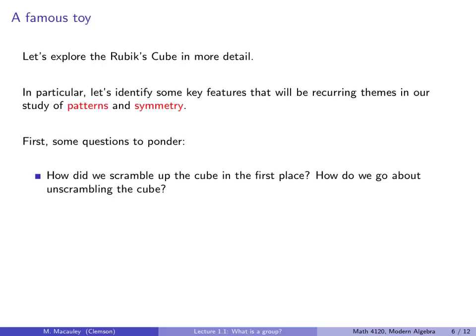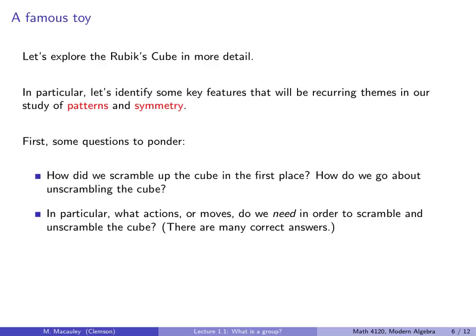So that's the next question. What actions or moves do we need in order to scramble and unscramble the cube? Obviously you could peel the stickers off and put them back, but do you want to actually allow that as a move? When you're scrambling the cube, you often rotate it in space and move it from your left hand to your right hand. But those are moves, but those are things that you typically ignore. They're not really important. They're not things that you are going to see in a solutions manual. So again, these are vague questions, so there's many correct answers.